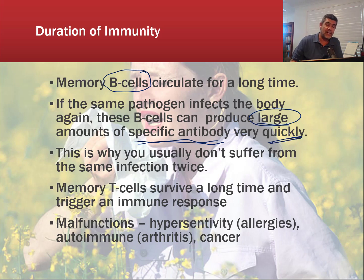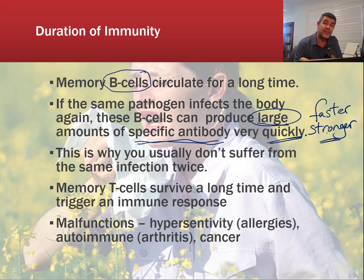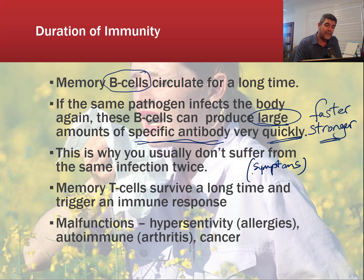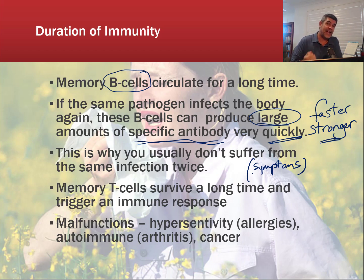A secondary exposure can be both faster and stronger than our primary exposure. This is also why we often don't suffer symptoms from the same infection twice — because our system has already encountered it and knows the plan. We can put that plan into place much quicker and attack the pathogen very quickly, so despite its rapid rate of reproduction, we're still on the front foot.